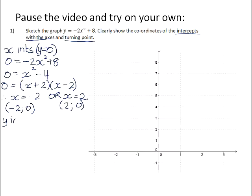To calculate the y-intercept, we let x equal to 0. So we get y equals negative 2 times 0 squared plus 8, and that just gives us 8. So that is the point 0 and 8.